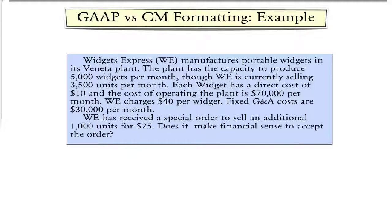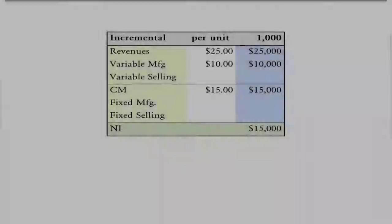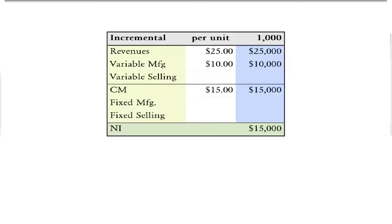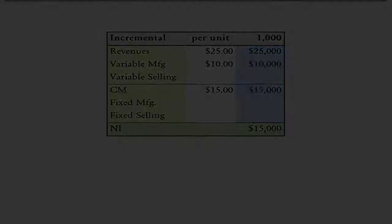Here's an example where if you were to do the accounting the way it's done for generally accepted accounting principles, you might not make the right decision. The easiest way to see the correct answer is to look at the problem from a point of view of incremental revenues and incremental costs.